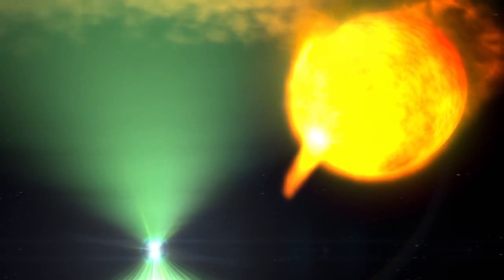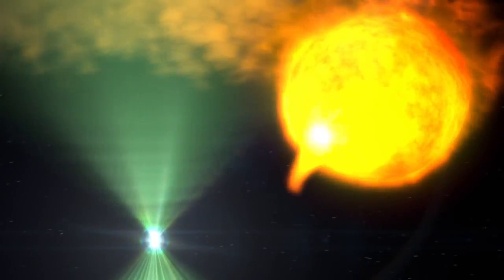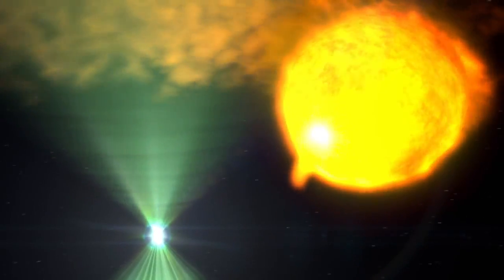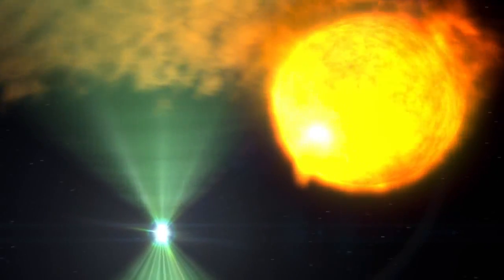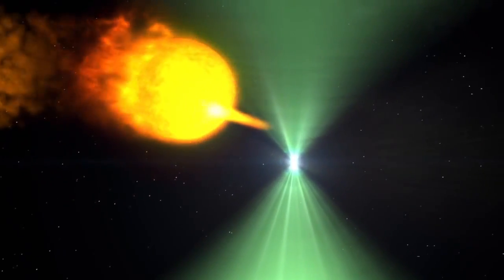The two stars orbit so closely, the gas from the Sun-like star overflows, and a stream falls toward the pulsar. But the pulsar produces an outflow of its own. Its spin and magnetic field accelerate charged particles to near the speed of light, creating a high-energy wind.